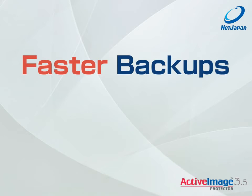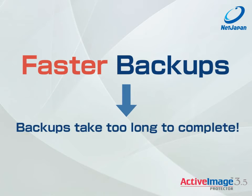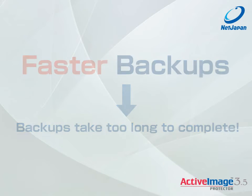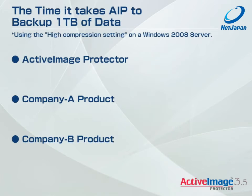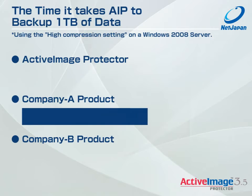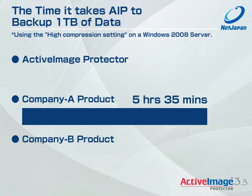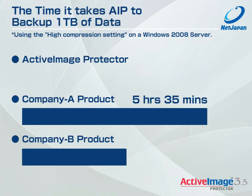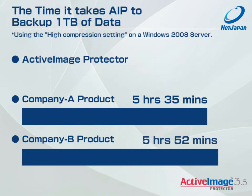Faster Backups — because backups take way too long to complete. Here's an example of the time it takes Active Image Protector to backup 1TB of data while using the high compression setting on a Windows 2008 server.